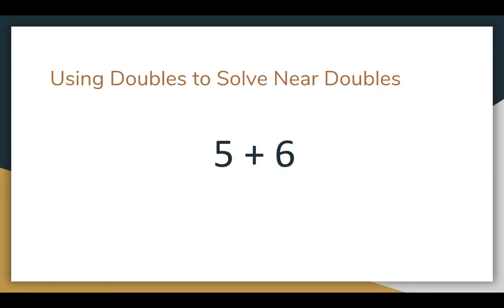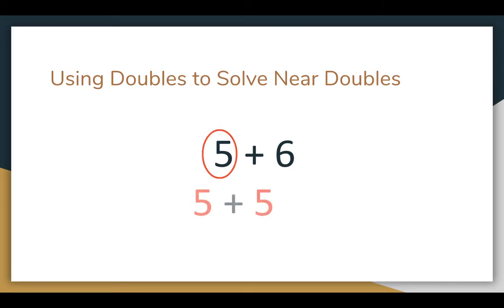Let's take a closer look at the first example. If I look at five plus six as a near doubles fact, what I'm going to do is look at which number is smaller. Looking at five plus six, I know that five is the smaller number. So I'm going to use the doubles fact of five plus five to help me solve. Looking at my five, my smaller number, I can use five plus five.